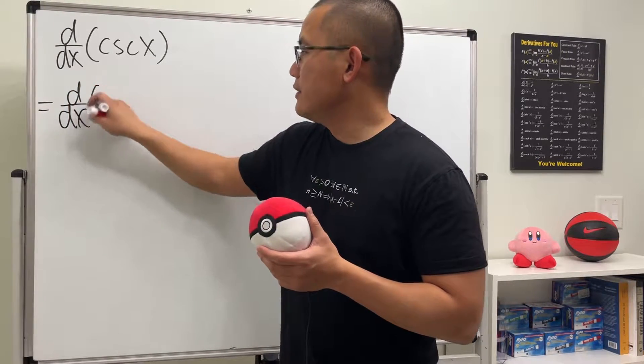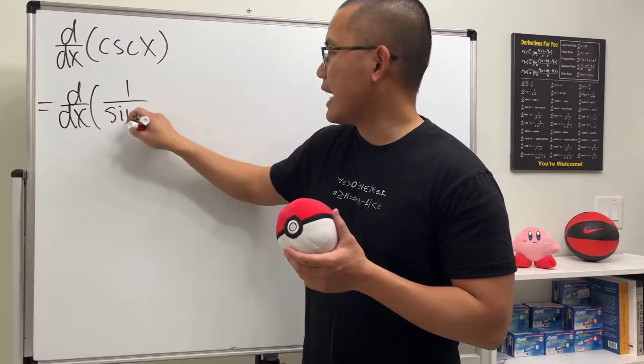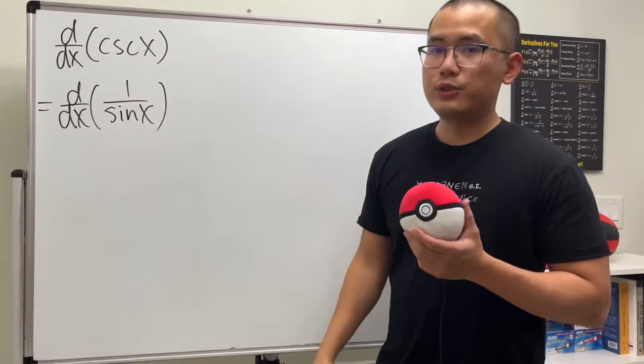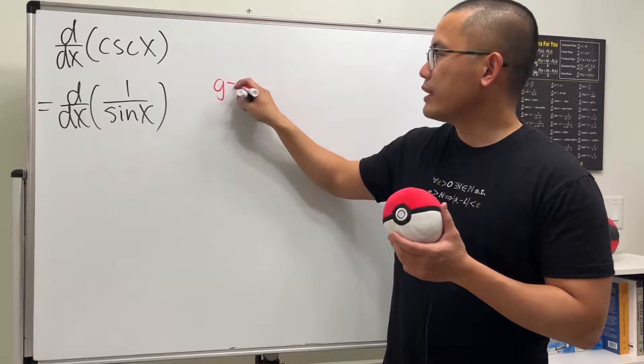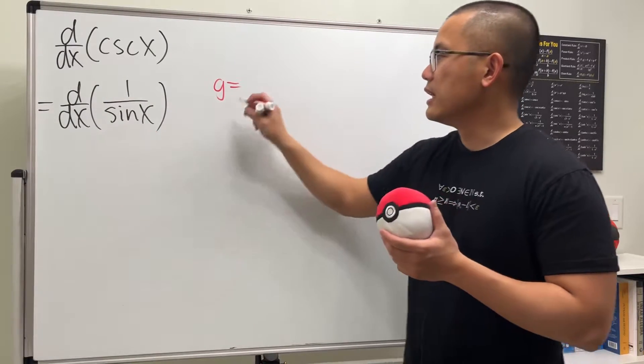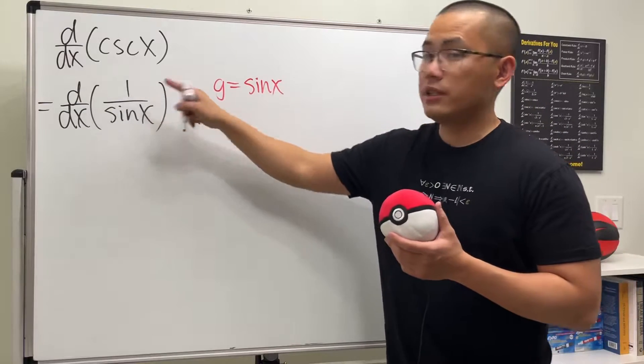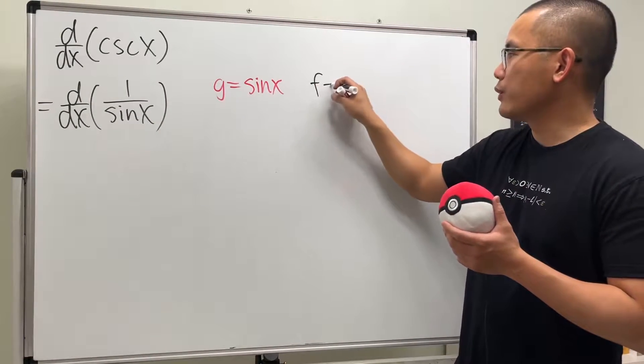To take the derivative of 1 over sine x, we can actually just use the quotient rule. Let me put that down on the side for you guys. I'm going to write down the bottom function, which is just sine x, and then the top function is 1, so let me put that down right here for you guys.